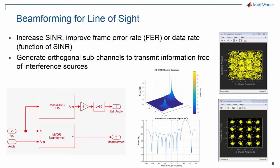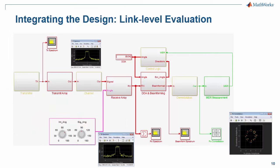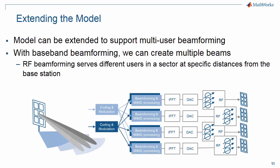We also have a library of algorithms for beamforming. Use beamforming to increase the signal to noise ratio, improve the frame error rate, or the data rate. We can take all the components that we put them together as a system. In this example we're looking at the link level evaluation as we put all of our pieces together to run a full simulation. This model can be extended to include multi-user support for beamforming. With baseband, beamforming can also create multiple beams. And this RF beamforming serves different users in a sector.